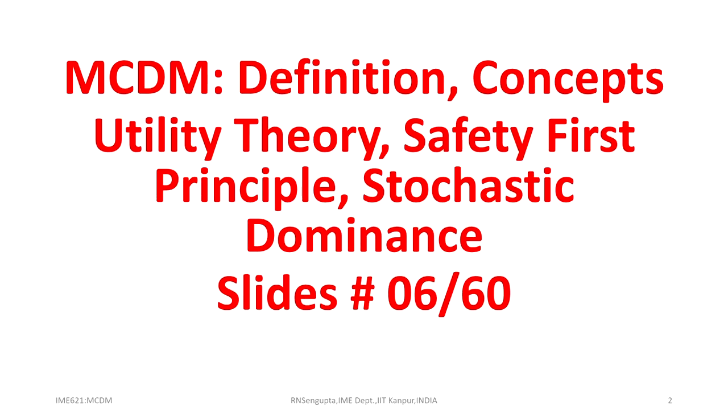In the first week we covered different examples — not exhaustive, but some examples which people can encounter in Multicriteria Decision-Making. Some are quantitative, some are qualitative, and we will handle them as we proceed with the course. In this sixth lecture, we will consider some definitions of MCDM in more detail, the concepts of utility theory, the safety first principle, and the concept of stochastic dominance.